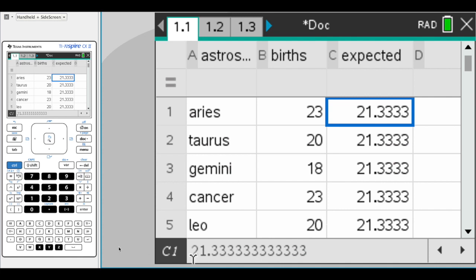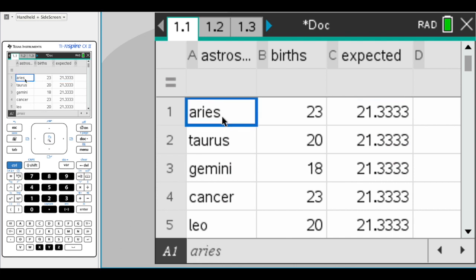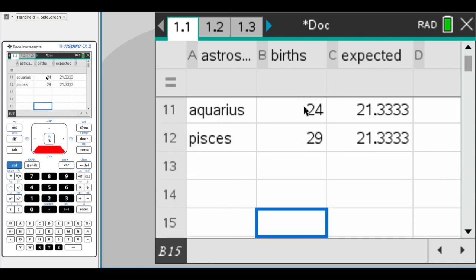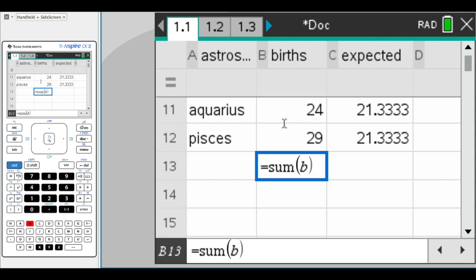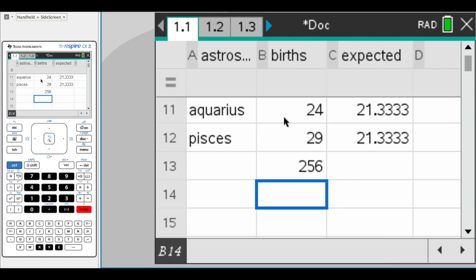Moving back over to our calculator, you can see I've already done a little bit of work. I've taken the table that we saw earlier, and I simply typed this into a spreadsheet. We have our astrology signs in the first column, we have the births for the CEOs in the second column, and based off of our calculations, we saw that there was 256 births that we calculated all together. You can always hit equals, and you can just type in sum. If you want to sum B1 colon B12, because that's the column that I'm in, I get 256.